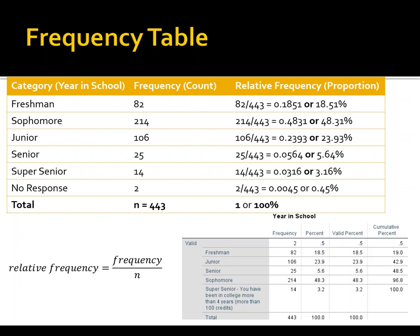To calculate the relative frequency, we take the frequency and divide it by the total or sample size. So I'm taking 82 and dividing by 443 to get the respective relative frequency. The relative frequency can be expressed one of three ways: as a ratio (not very common), as a decimal value, or as a percentage. We do that respectively for each category to find each one's relative frequency.